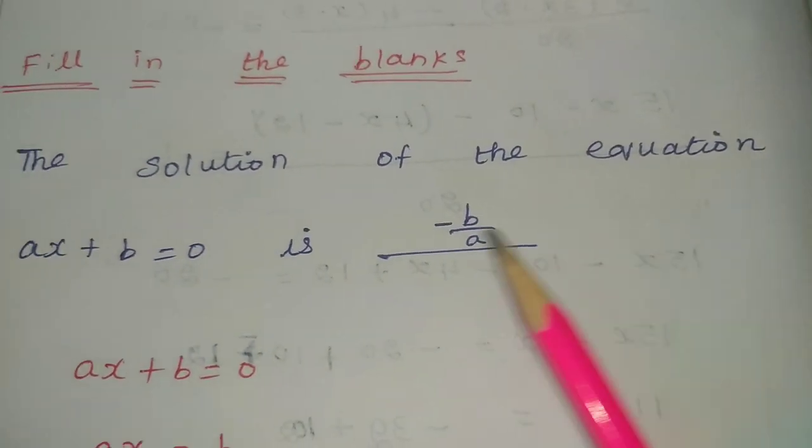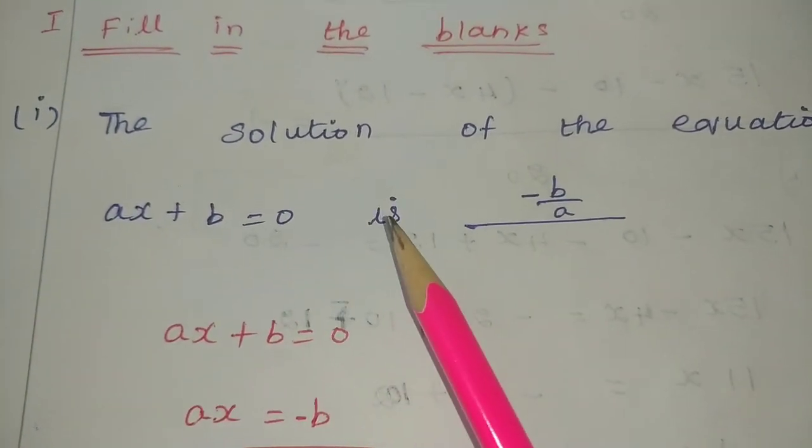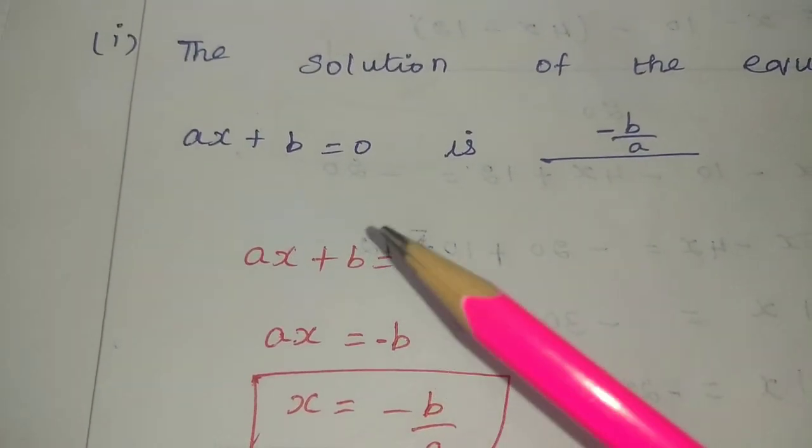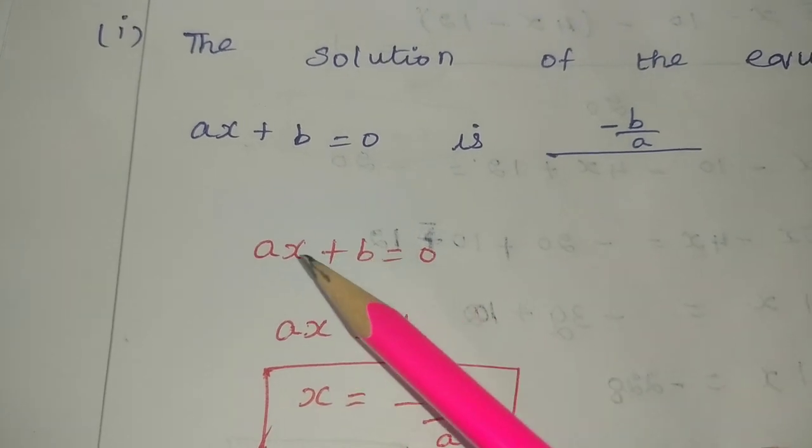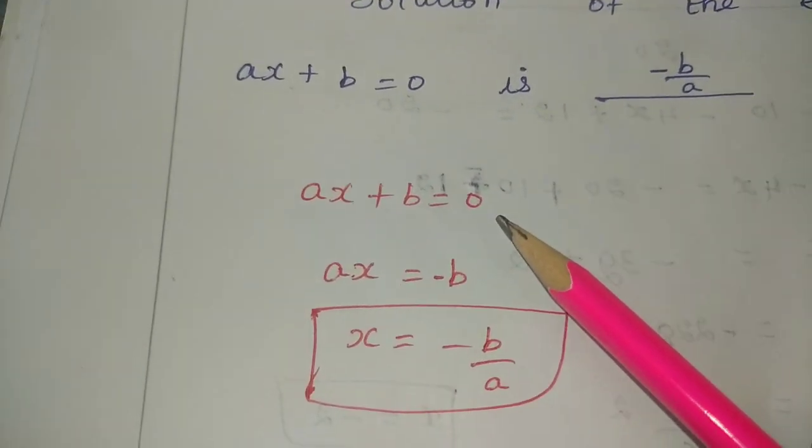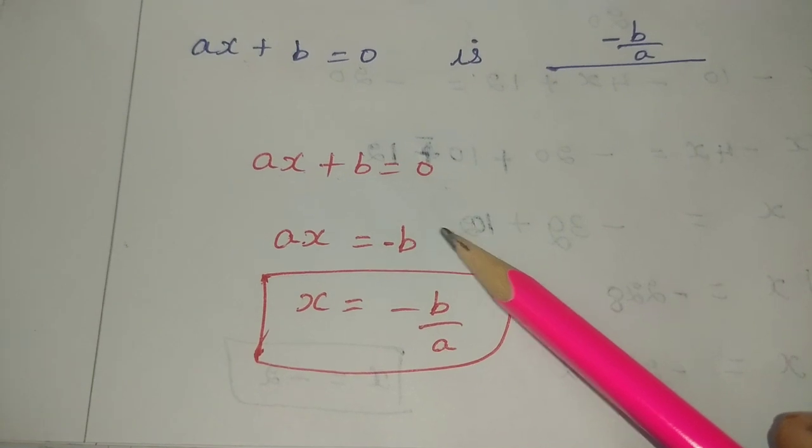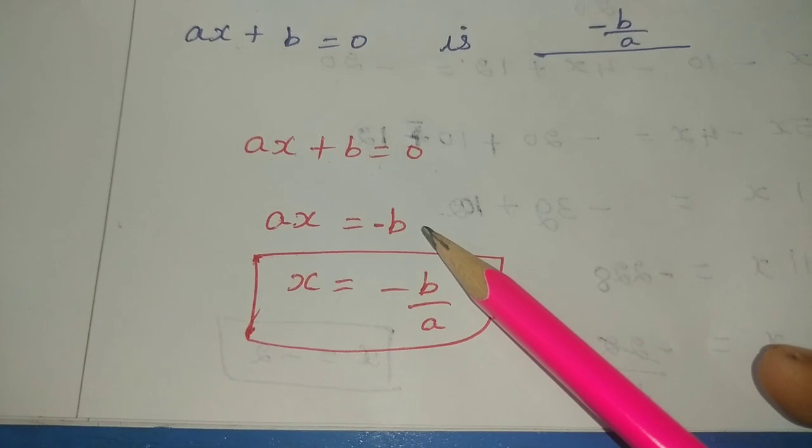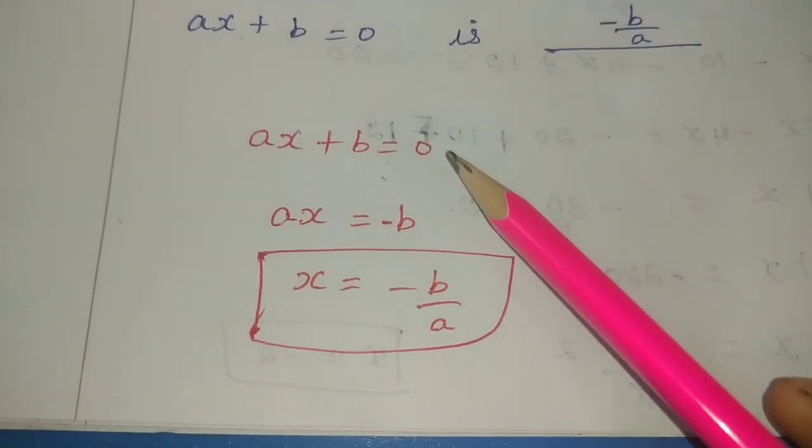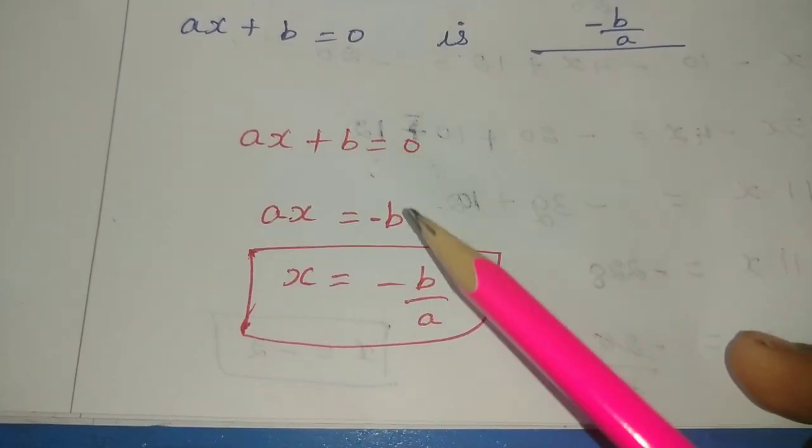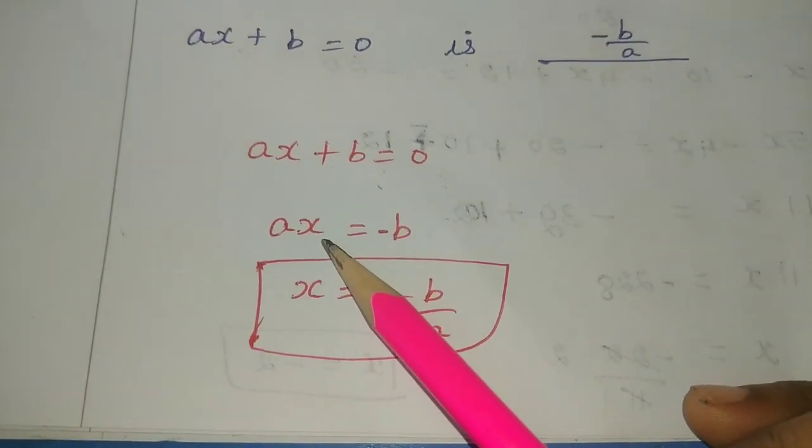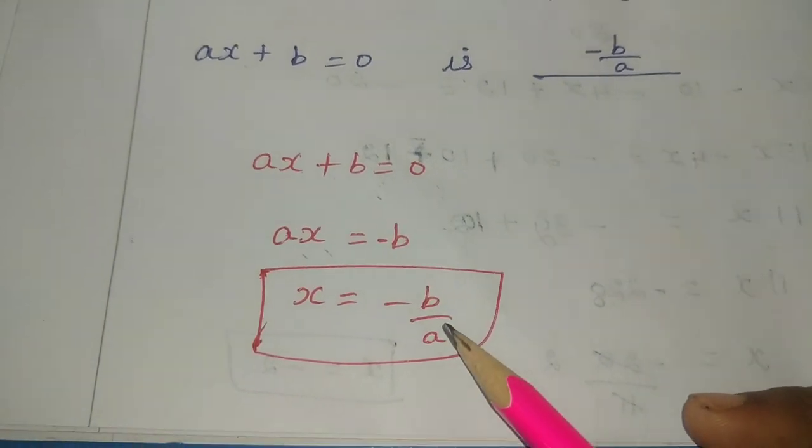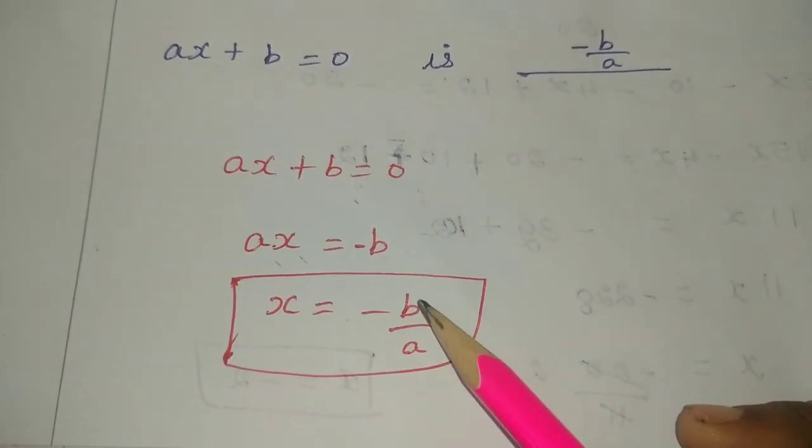The solution of the equation ax plus b equal to 0 is dash. First, we solve this equation. ax plus b equals 0, so ax equals minus b. Therefore, x is equal to minus b by a.